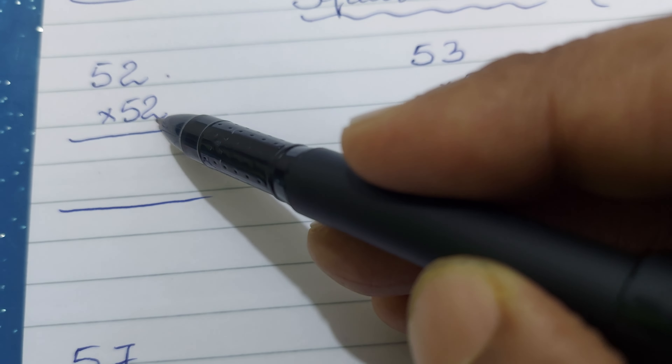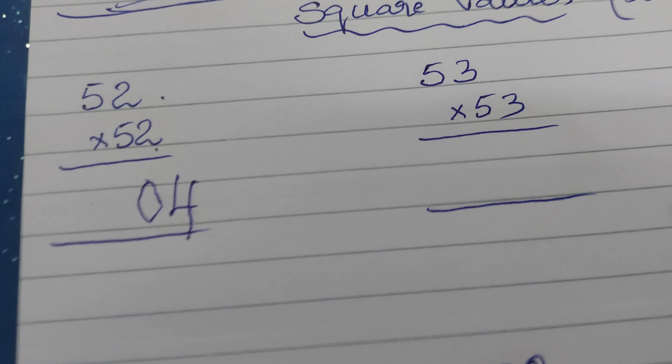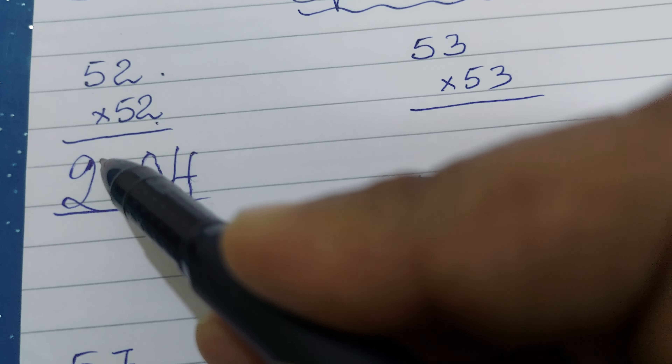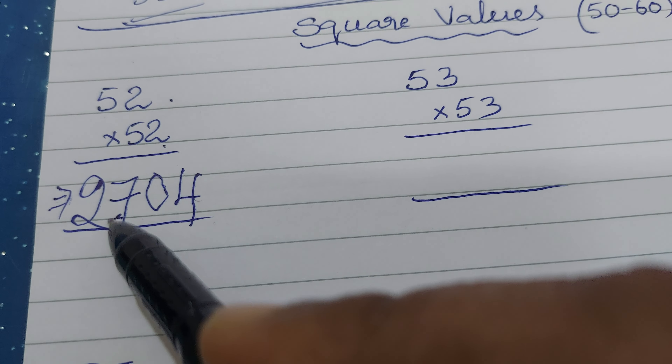What we have to do: first, take the digit 2 from 52. Multiply 2 into 2, which gives 4. Write it as two digits: 04. Then add 25 to the units digit — 25 plus 2 equals 27. So we write 27 in front.